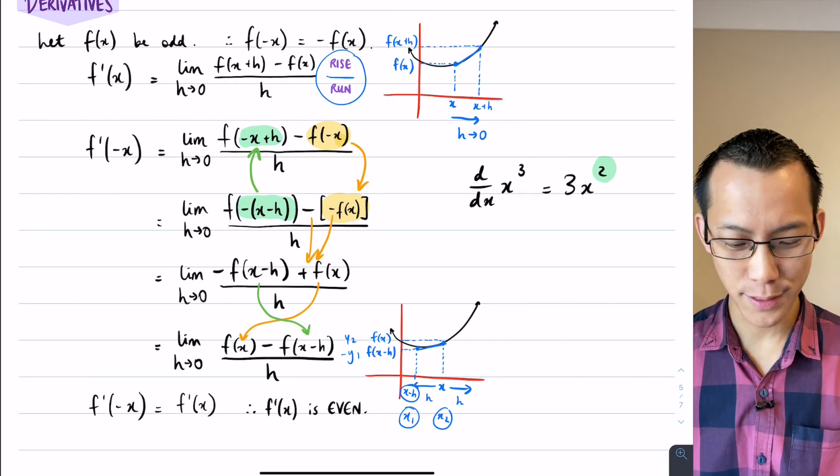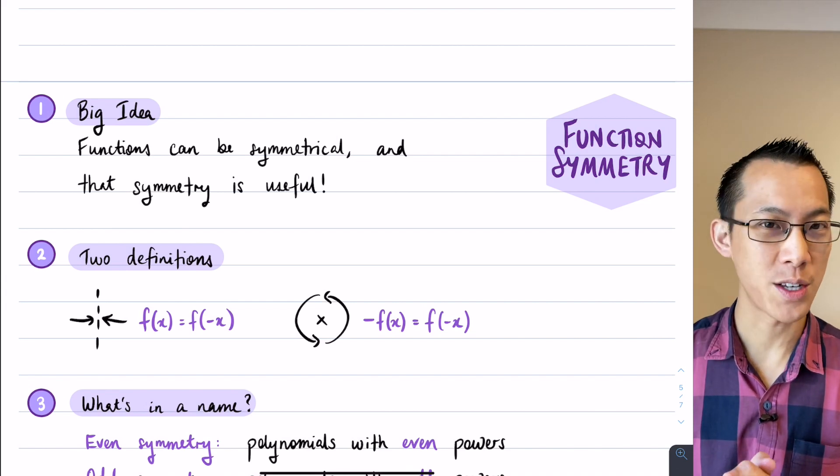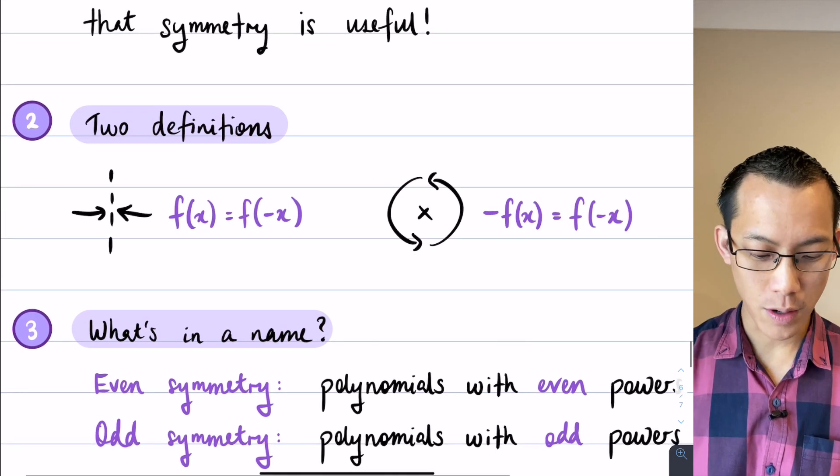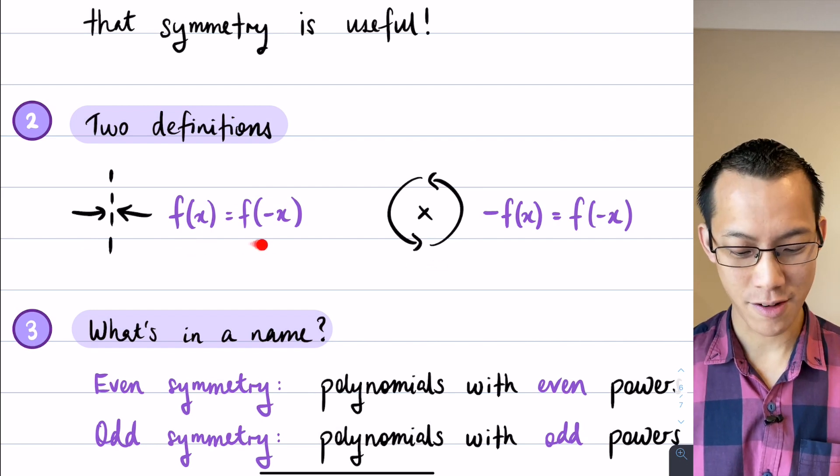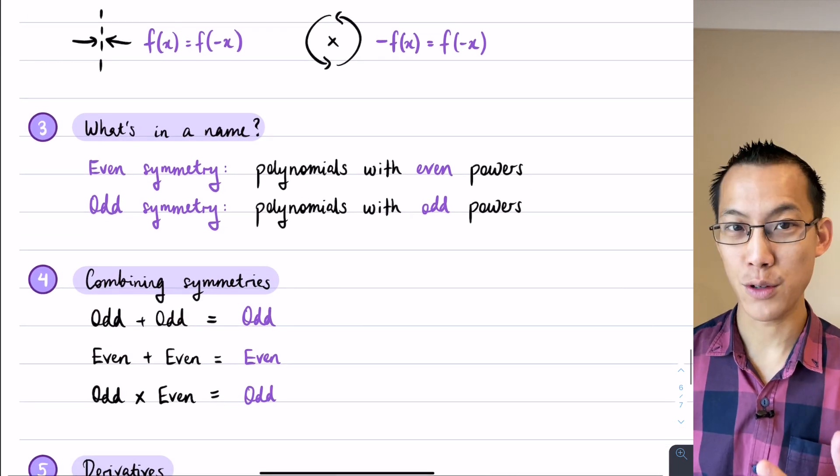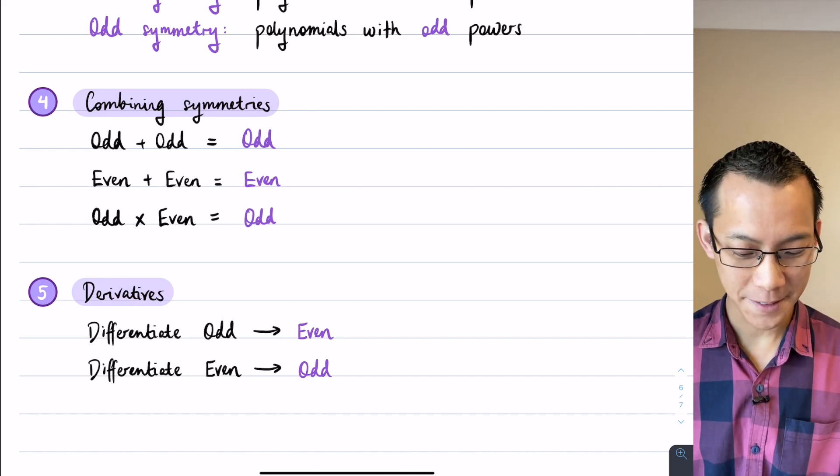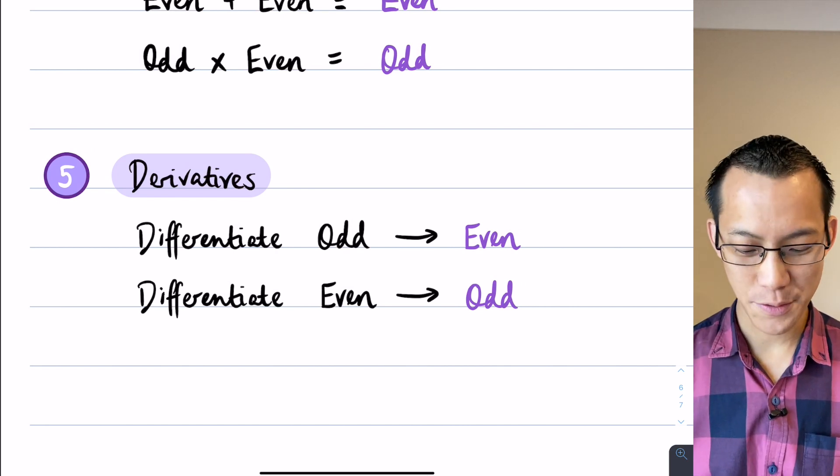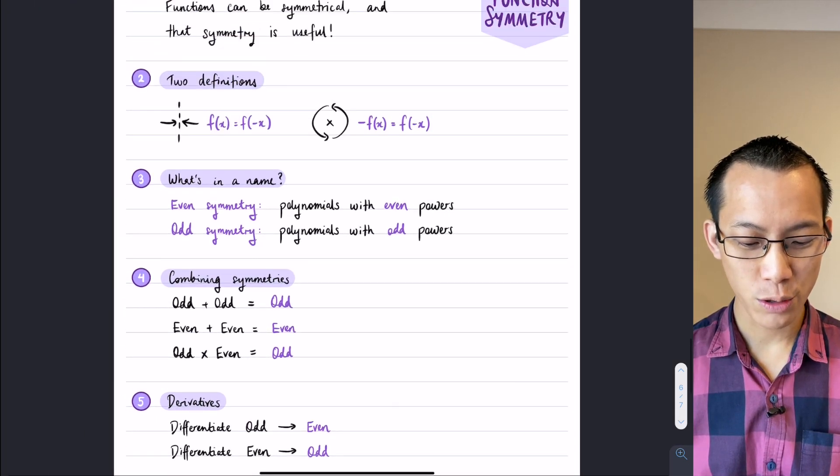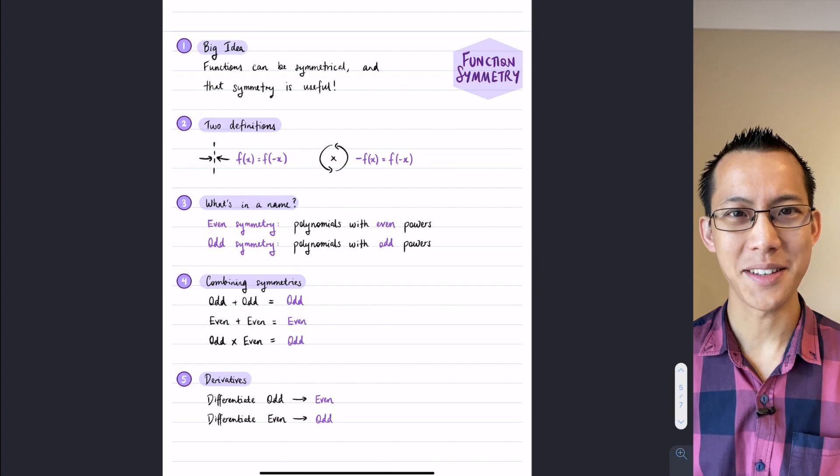So, I hope that all makes sense, we covered a lot of ground. The big idea was that functions have symmetry, right? And that symmetry can be very useful, particularly when we're integrating because it can save you a lot of work or make your integral a lot easier. We looked at these two definitions, a geometric one, thinking about reflection and rotation, and an algebraic one, using our function notation here. The names, as we saw, even symmetry and odd symmetry come from the polynomials with those respective powers. We saw the different ways you could combine symmetries either by addition or multiplication and the results you would get. And then lastly, we saw when you differentiate an odd function, you get an even one, and like I said, I'll let you prove that the reverse is also true. So, in summary, when you're looking out, when you're doing, you know, integration or any other kinds of functions, look out for functions with symmetry because they can make things a lot easier for you.